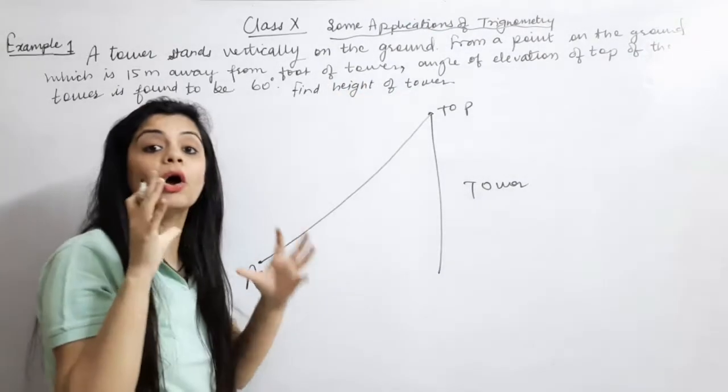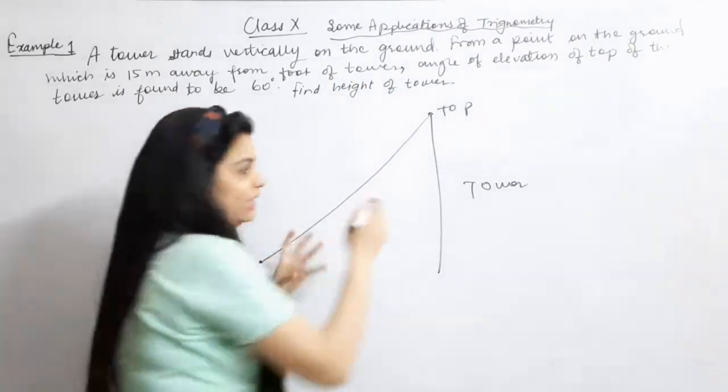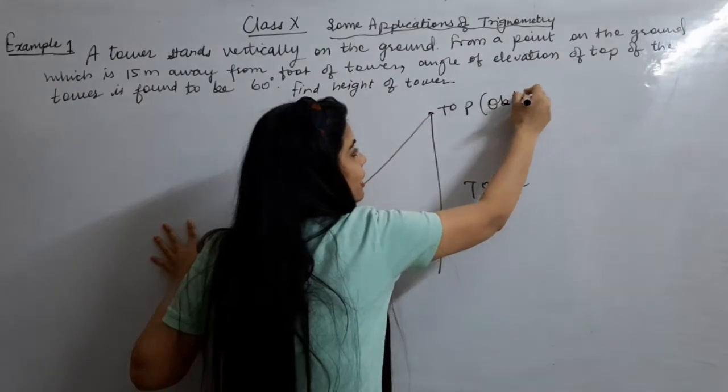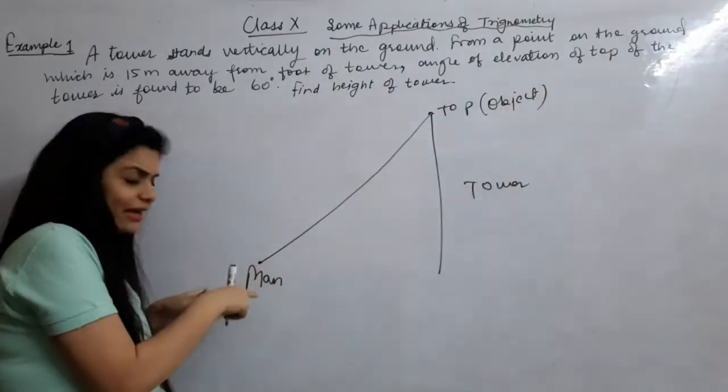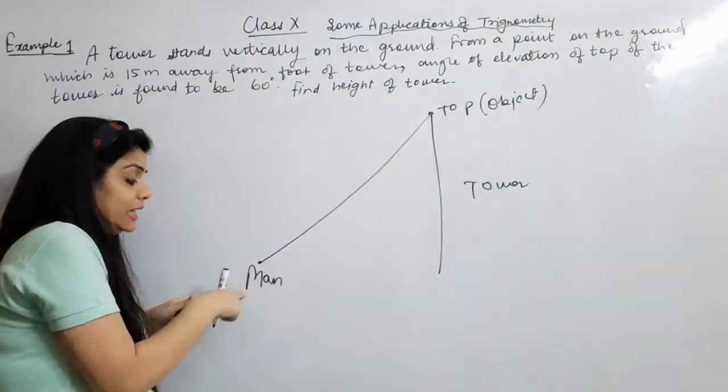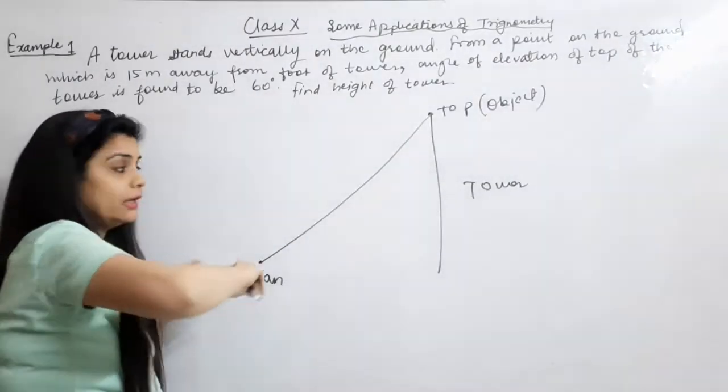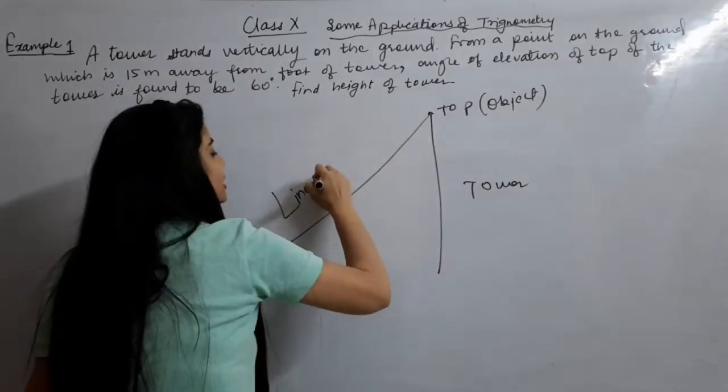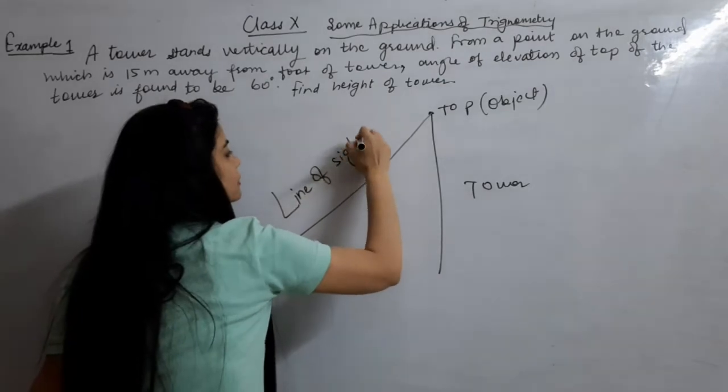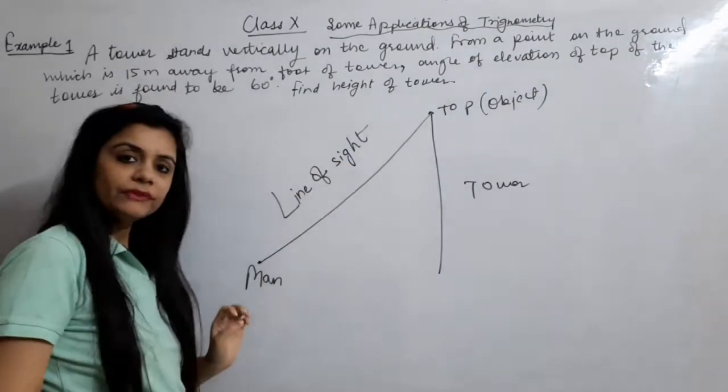This is my object. I am looking at that object. This is the object, this is the person. We will join that line. This line is called line of sight. This line of sight.